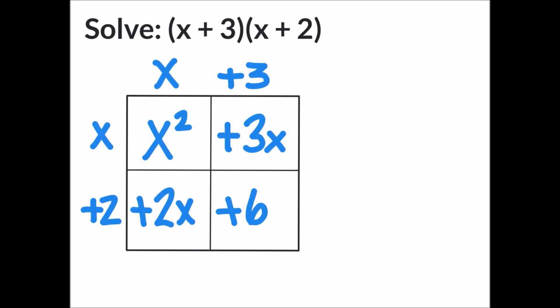Next we're going to write out all of our terms on the side: x squared plus 3x plus 2x plus 6. And now we need to simplify.